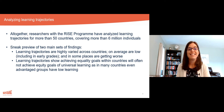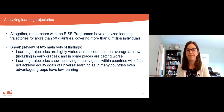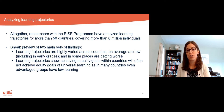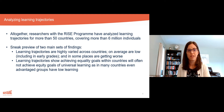As a sneak preview of the two main sets of findings: we find that learning trajectories are highly varied across countries, on average are low, including and especially in the early grades, and in some places are actually getting worse, not better.